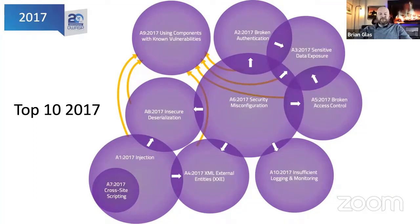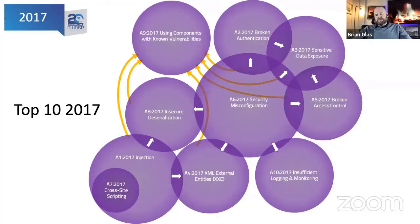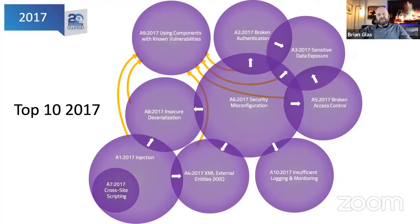Sensitive data exposure was an interesting case. Broken authentication, broken access control, and misconfiguration can all create sensitive data exposure — meaning it's a result, not a root cause. I realized this when I saw training for sensitive data exposure that said 'and we're going to go beyond the Top 10 and talk about cryptographic failure,' which was the vast majority of that category. That's why we no longer have sensitive data exposure. Also, while someone might say everything is in 'components with known vulnerabilities,' those are third-party code, whereas the others are first-party — things you're directly responsible for.